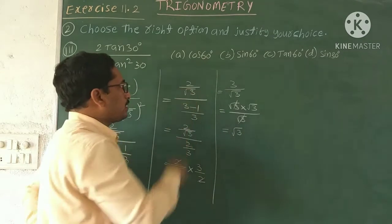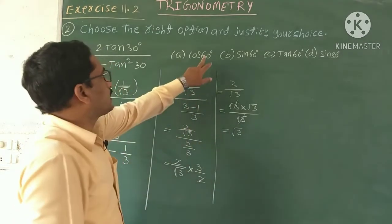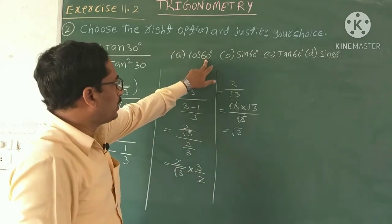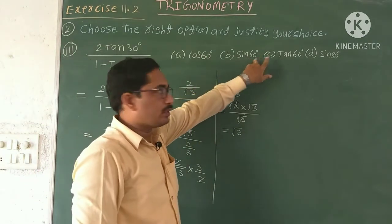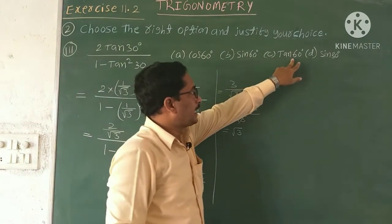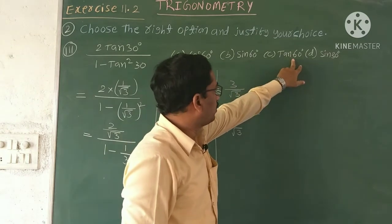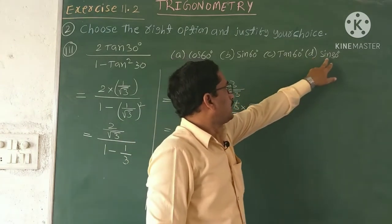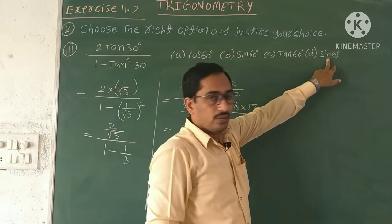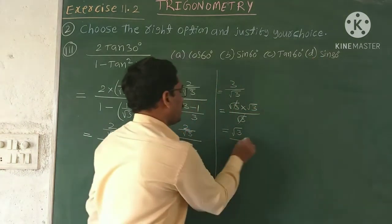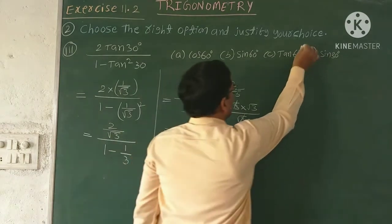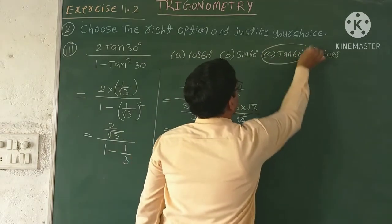Select the answer. Cos 60 = 1/2, sin 60 = root 3/2, tan 60 = root 3, sin 30 = 1/2. Since our answer is root 3, the correct answer is C, that is tan 60.